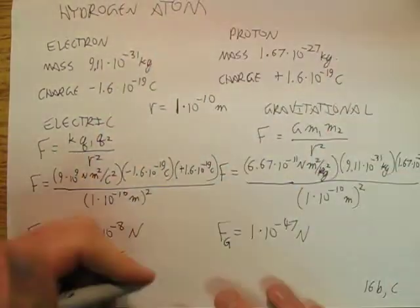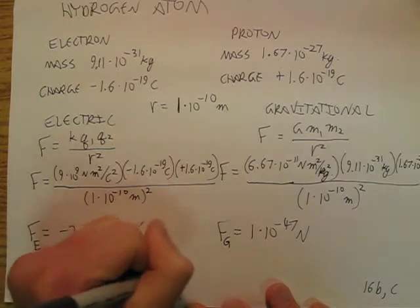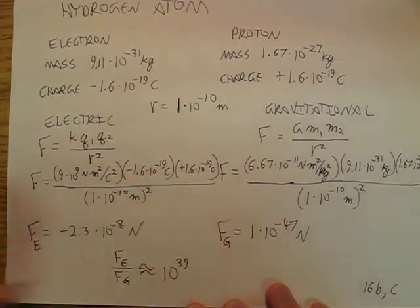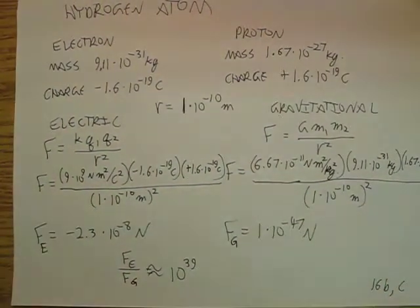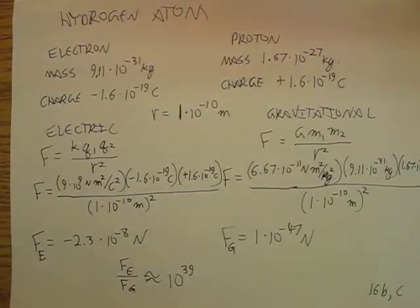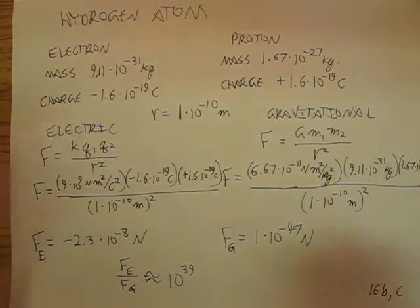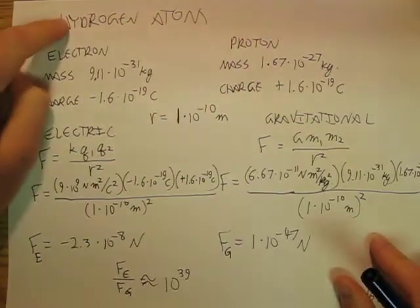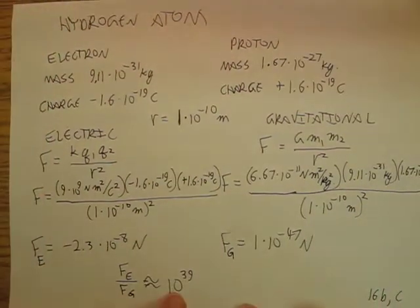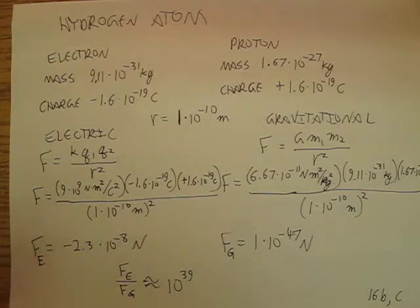So in this example problem, the electrical force between an electron and a proton in a hydrogen atom is like 39 zeros more—it's 39 orders of magnitude.